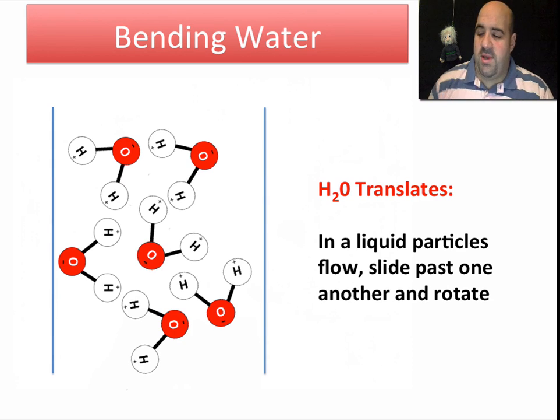So we have H2O, and this is supposed to visualize a stream of water pouring down. So we have water falling down. Now these water molecules are free to translate. They can rotate, flip, and move all around. In a liquid, the particles flow, slide past one another, and they can rotate and do other things. So that's part of the idea of a liquid, capable of flow, fluid motion, moving around one another.